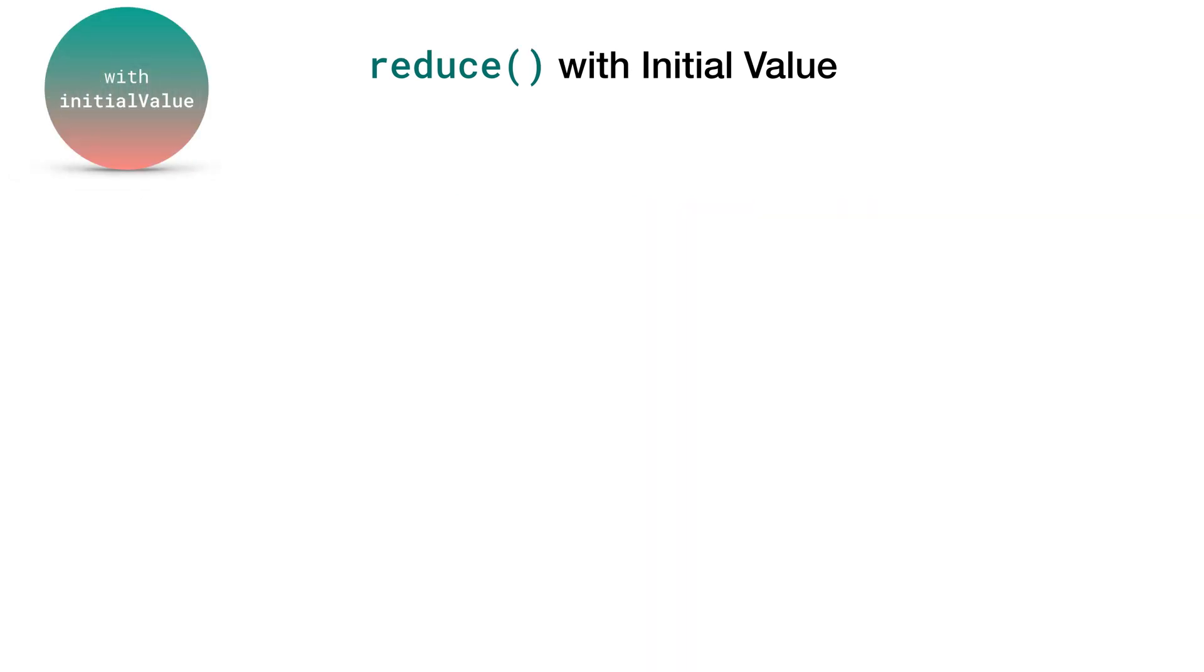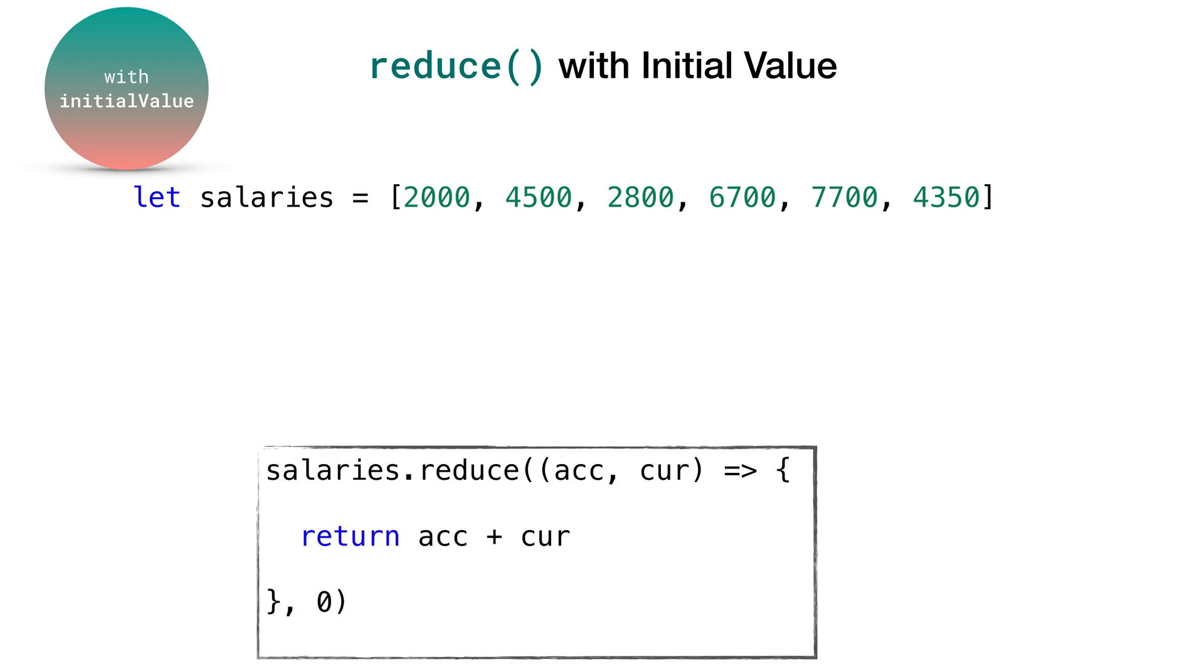We will solve the same problem but this time with an initial value. We call the reduce method on salaries array and since the arrow function is not in a single line anymore, we introduce the curly brackets with a return statement. We also added the second argument initial value which is 0. Since we have an initial value, accumulator starts with that and the current value is the first value in the array which is 2000.